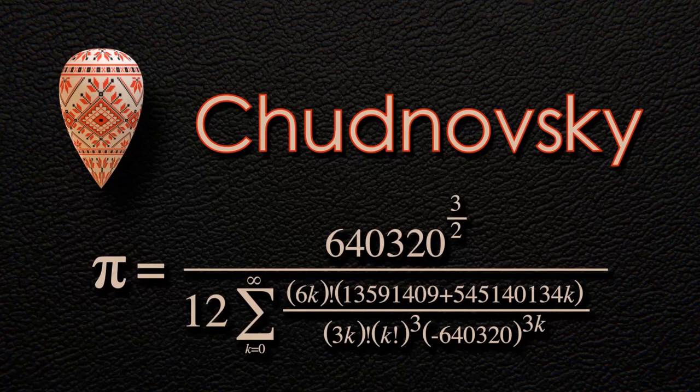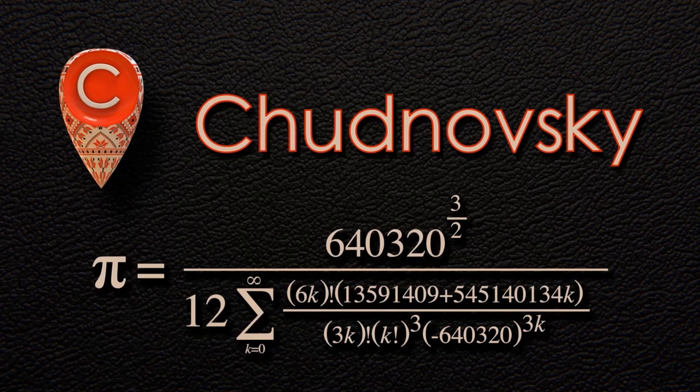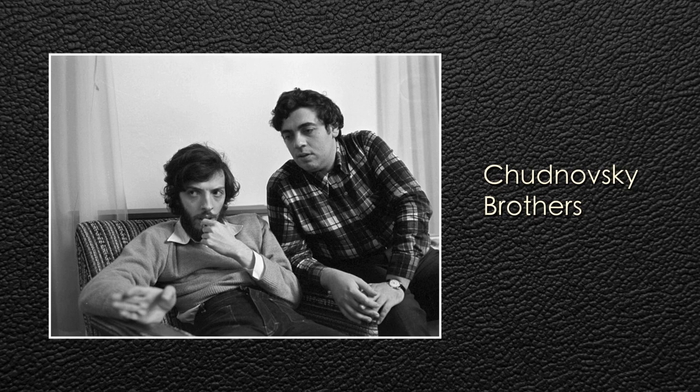In 1988, a couple of Ukrainian-American brothers named the Chudnovskys figured out a way to turbocharge Ramanujan's formula and came up with this crazy thing. This generates 14 additional digits of pi with each step. The Chudnovskys are actually kind of interesting characters. Not only did they come up with this Chudnovsky brothers algorithm, but they were actually pioneers in using supercomputers to do extremely deep calculations of the digits of pi.